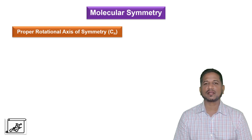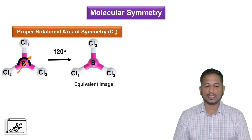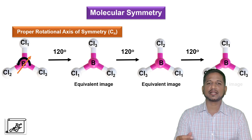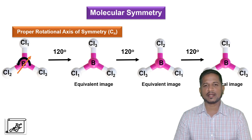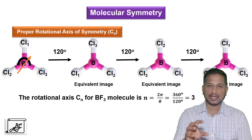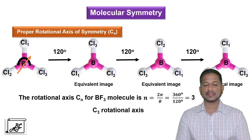Let's understand the proper rotational axis of symmetry with another example — the BCl3 molecule. Boron is at the center and these three are the chlorine atoms. If I rotate this molecule through 120 degrees, I will get an equivalent image. If I rotate it again by 120 degrees, it will result in another equivalent image, and finally we will get an identical image. This rotational axis CN can be found by dividing 360 by 120, which comes out to be 3. Therefore, it is the C3 rotational axis.